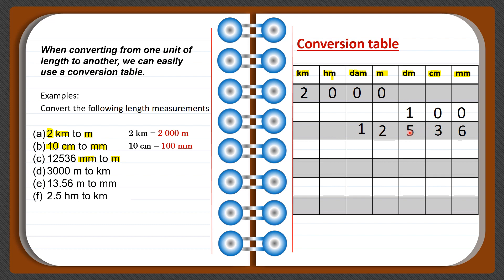We are converting to meters, so we locate the meter column and place a decimal point there. Remember, the decimal point is placed after a digit, not before. So the decimal point goes in the position of meters. Therefore, 12,536 millimeters equals 12.536 meters.